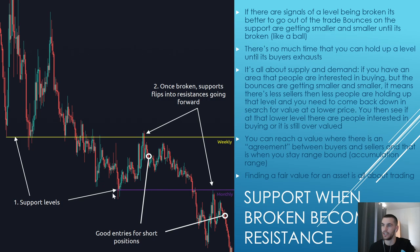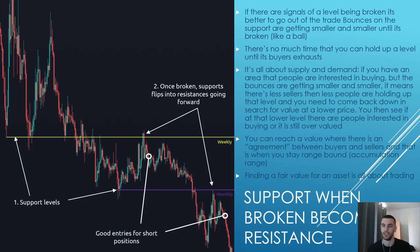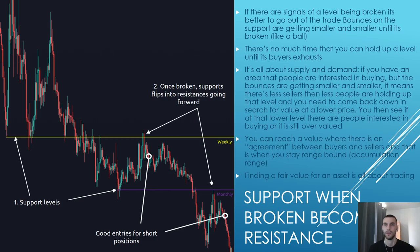You can see this monthly level has been back-tested, dropped, another back-test, drop. You can be entering either on the retest or when you see price going down and after the rejection. You should not be aiming for the perfect entry — just get with the flow. If there are no signals for a level being broken, it's better to go out of the trade. Bounces on the support are getting smaller and smaller until it's broken.